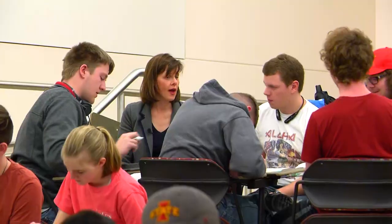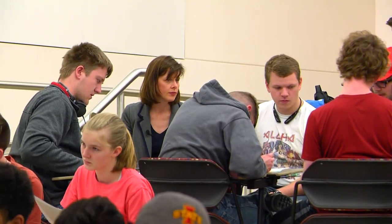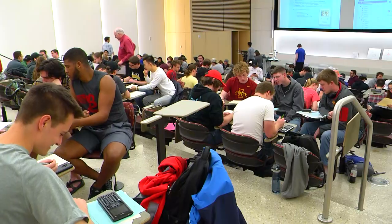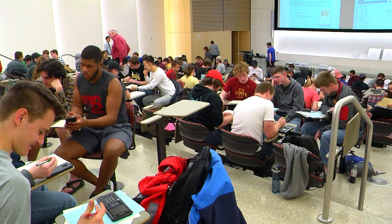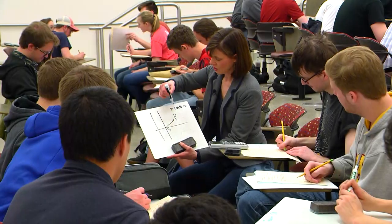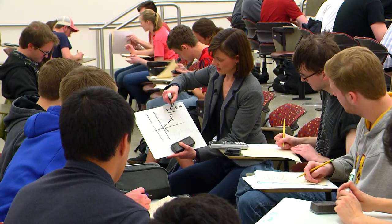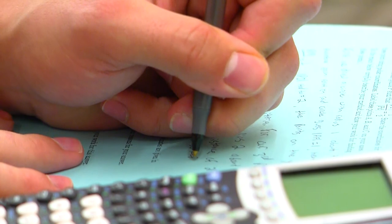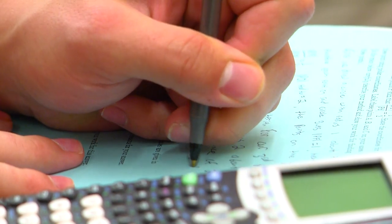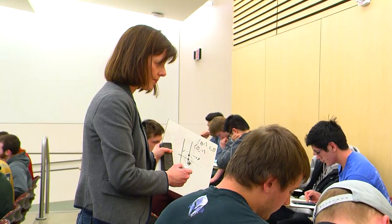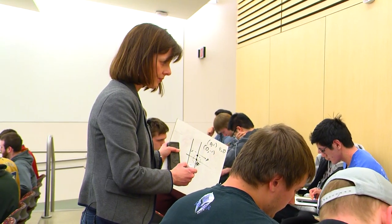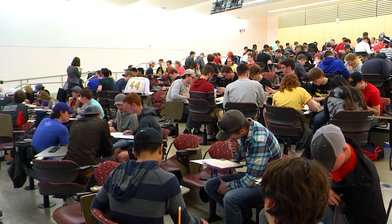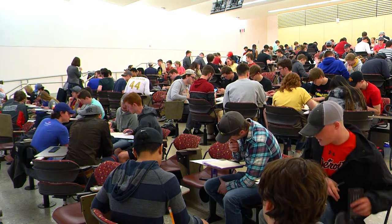What do you have for number 3 then? We put r over r cosine theta plus 2 equals 1. You're saying that this is x? Does that make sense? Okay, good. That's right.